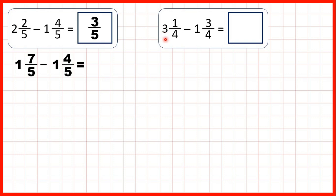Next we have 3 and 1 quarter and we need to subtract 1 and 3 quarters. If we only start with 1 quarter we can't take 3 quarters away, so we need to exchange with one of our wholes.